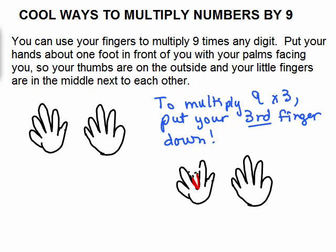To multiply 9 times 3, you would put your third finger down. I'm illustrating this as best I can, and you can see why I was a math major and not an art major, but here's your third finger down, shown in red. You're counting from the left, third finger.